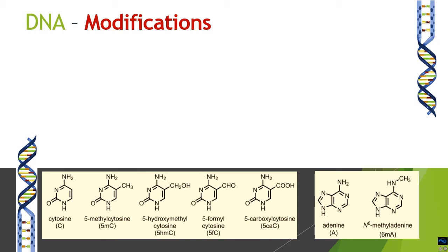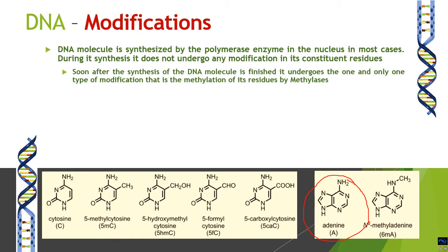We will begin with modifications in DNA — deoxyribonucleic acid. As already covered in the replication process, during replication we need to have both parental strands methylated for replication to take place. This methylation happens at the adenine residue in the GATC sequences in the oriC region, and until this methylation happens in both strands, replication cannot take place. For initiation to happen, the DNA molecule needs to be methylated at the adenosine residues of the oriC region.